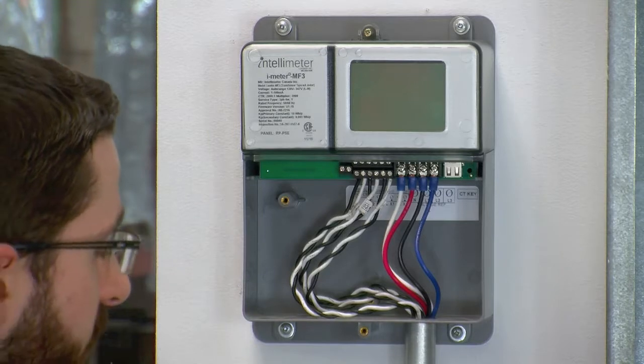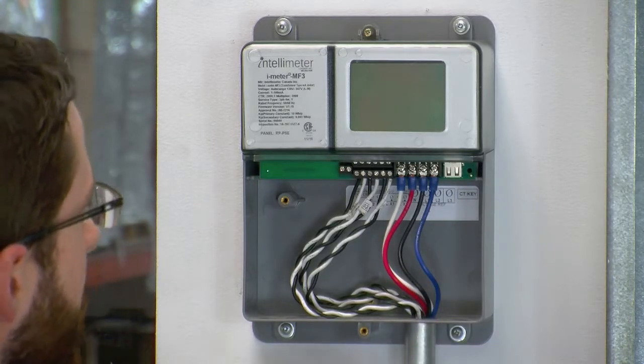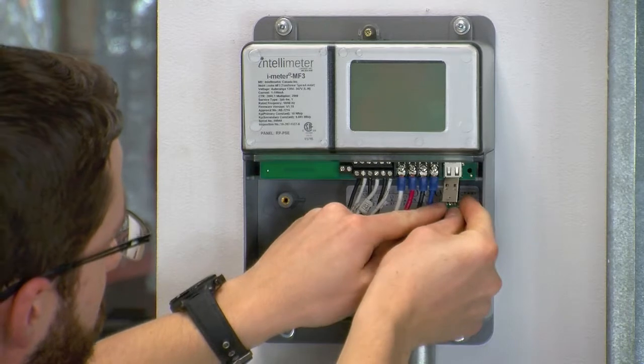Lastly, we're going to plug in our CT programming USB dongle. Once again, this tells the meter which type of CTs are being used with it.